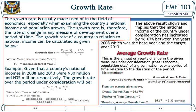Growth Rates: The growth rate is commonly used in the field of economics, especially when examining a country's national income and population growth. The growth rate is therefore the rate of change in any measure of development over a period of time. The growth rate of a country in relation to national income can be calculated using the formula where Y₀ equals income in the base year and Y₁ equals income in the target year.